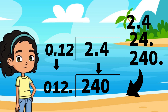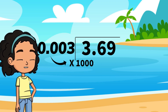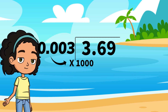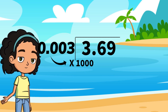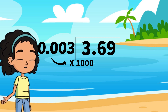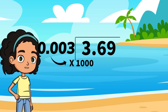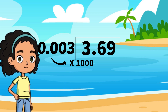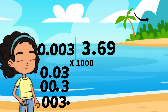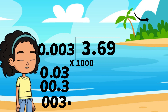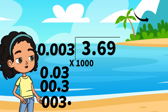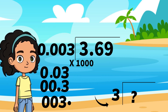One more example. To make three thousandths into a whole number, you move three places over by multiplying by one thousand. One, two, three. Your new number is three.